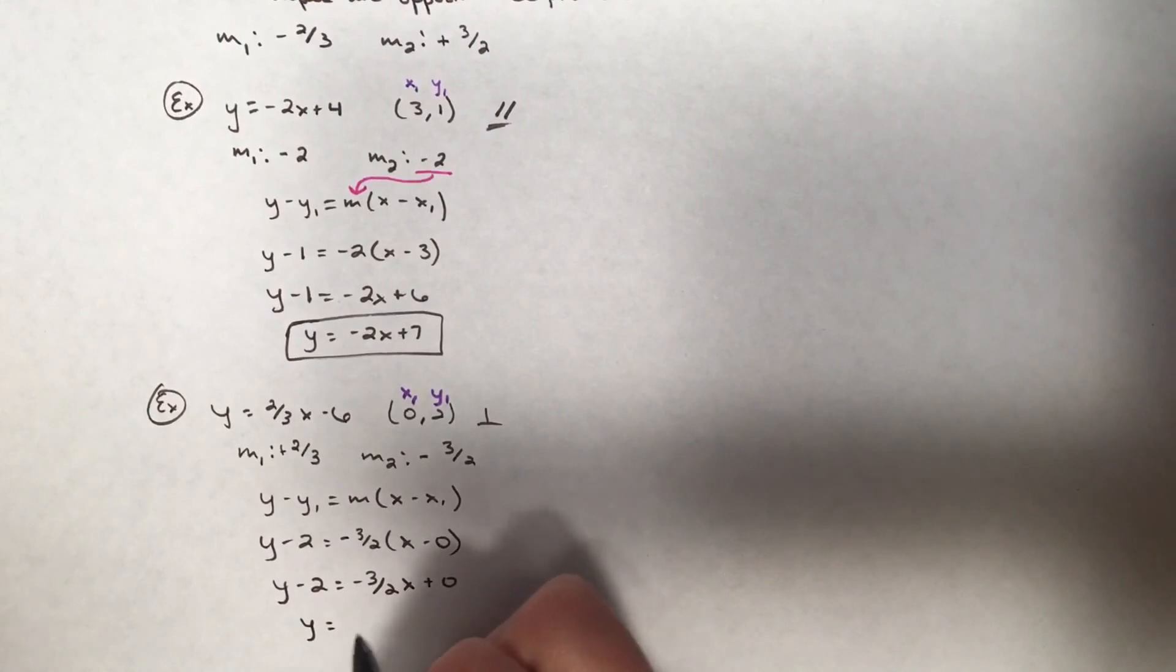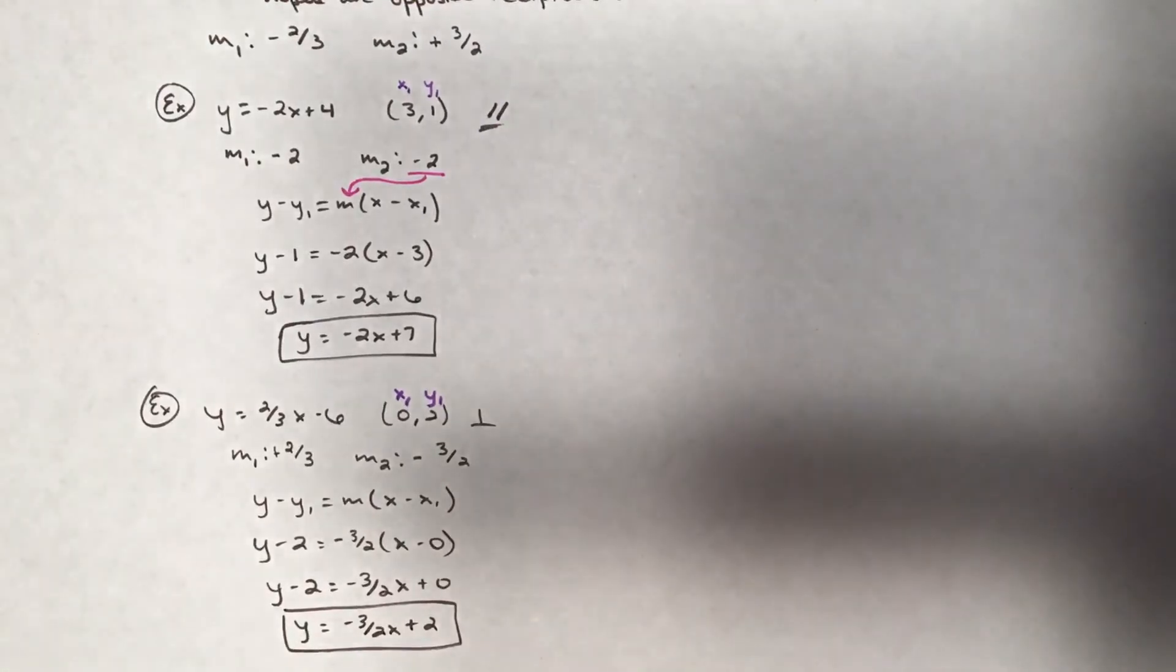Add that 2 over for a final of y equals negative 3 over 2 x plus 2. So parallel and perpendicular lines: parallel slopes are the same, perpendicular slopes are opposite reciprocals.